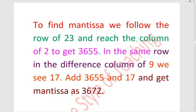23 کی رو میں جائیں گے، کولم 2 کا ویلیو لیں گے which will be 3655. اور اسی رو میں ڈیفرنس والے کولم میں 9 کے نیچے کی ویلیو لیں گے that is 17. اور 3655 میں آپ 17 کو ایڈ کریں گے, you will get 3672.